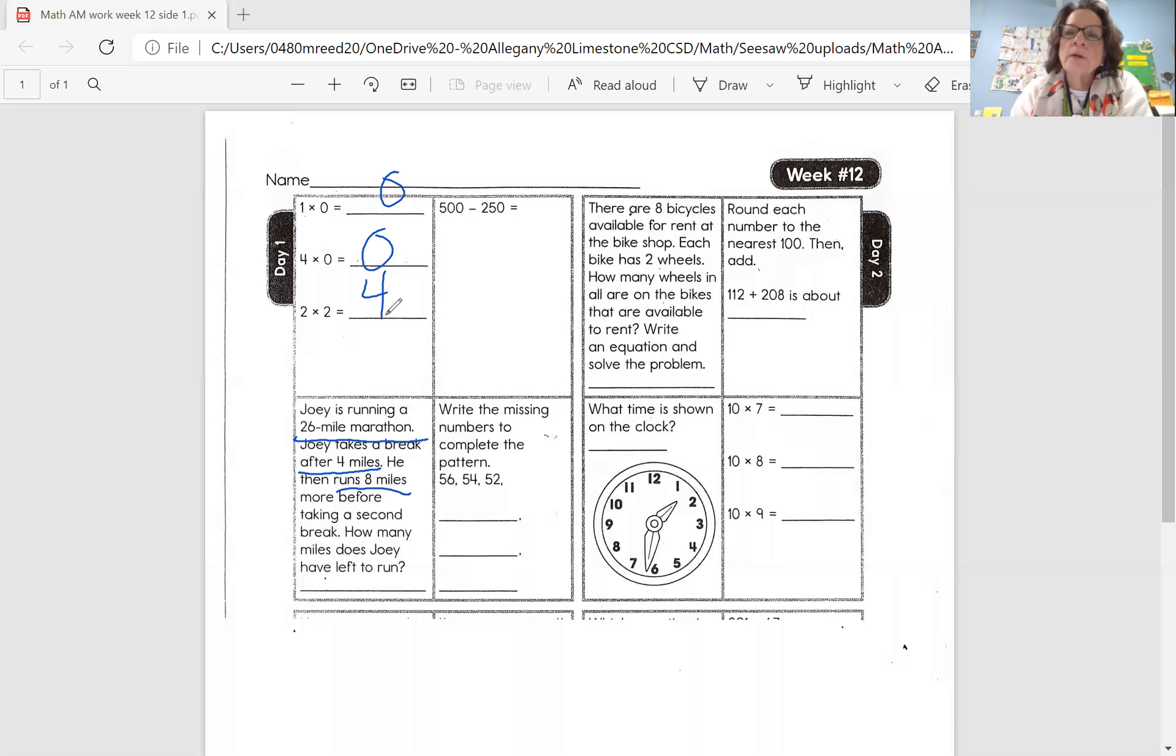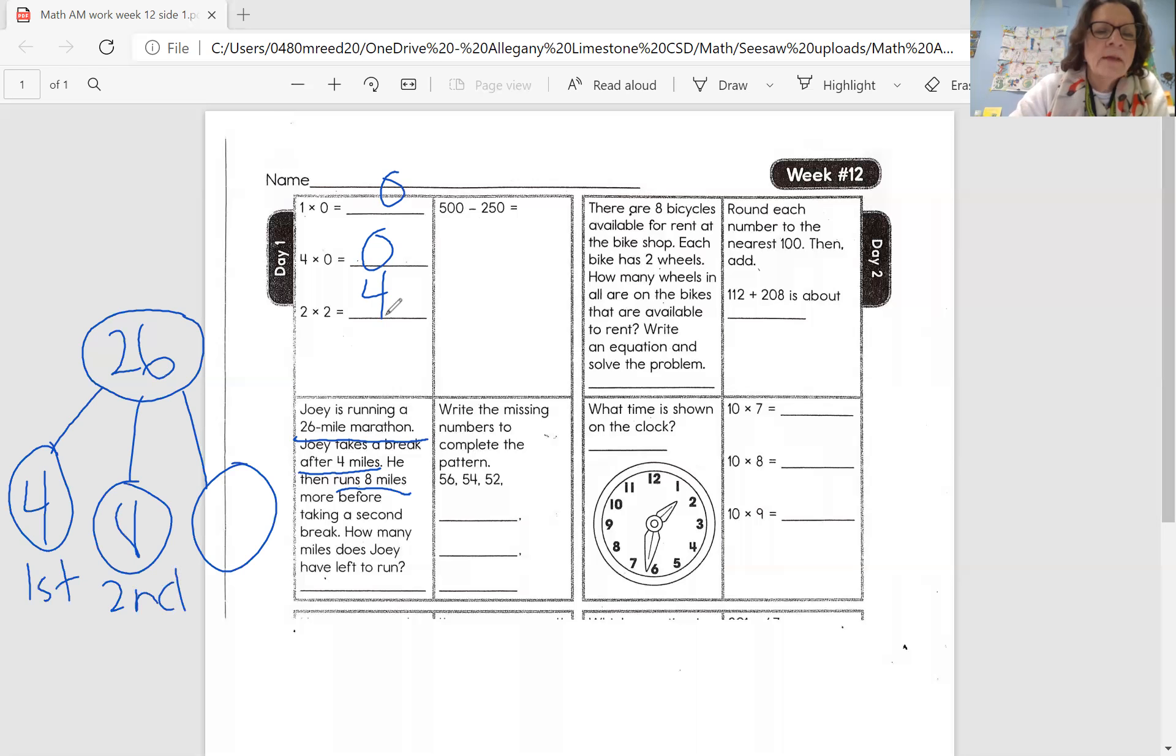If you think about this, we're taking a whole race and we're splitting it into three parts: the amount he ran first, the amount he ran second, and the amount he has left to run. We would represent that with a three-part number bond. While maybe you don't need the picture, the picture really makes you stop and think about the concept. I'm going to take the race and split it into three parts. The total race is 26. He runs four miles, then he takes his first break. He runs another eight miles, then he takes his second break, and then this is what he has left to run.